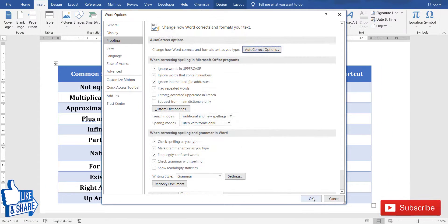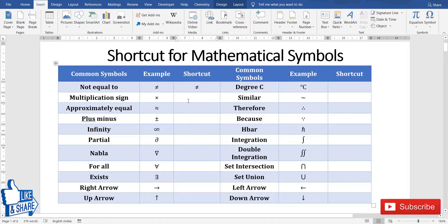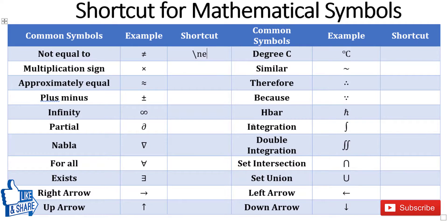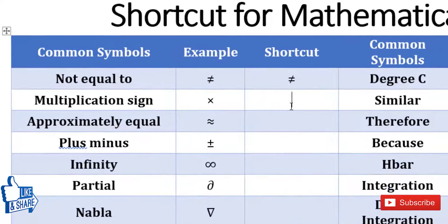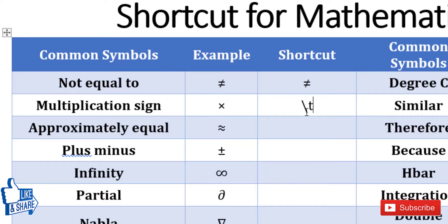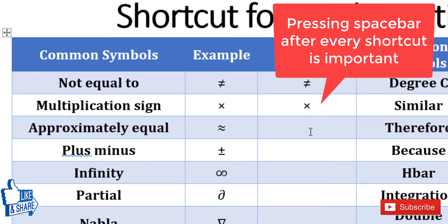And that's all. So this is the shortcut for not equal to—that is just backslash E and you have to press space. Many times we use multiplication signs. The shortcut for this is backslash times to get the multiplication symbol, and make sure that whenever you type a shortcut, you need to press space.